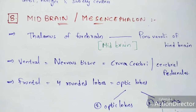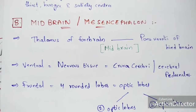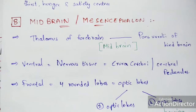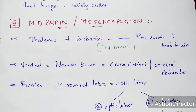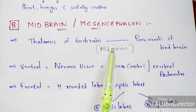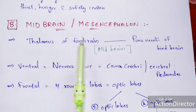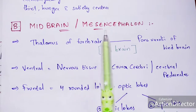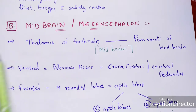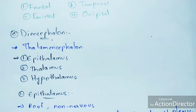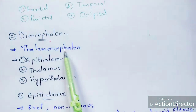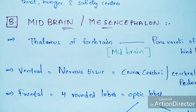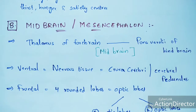The midbrain is also known as the mesencephalon. It is located between the thalamus of the forebrain — that is, the diencephalon — and the pons Varolii. If you see the diagram, the midbrain is present between the thalamus and the pons Varolii.